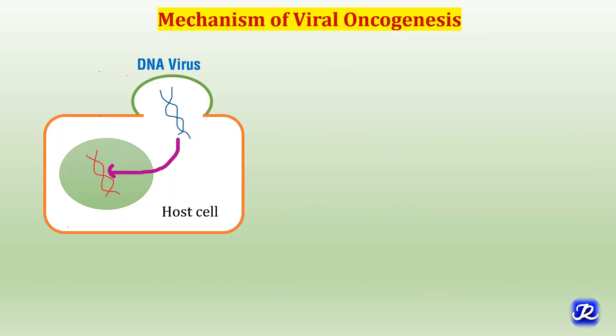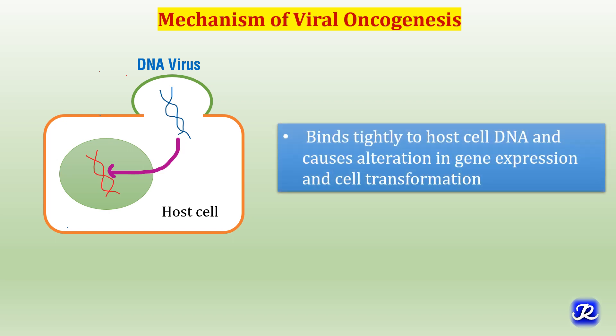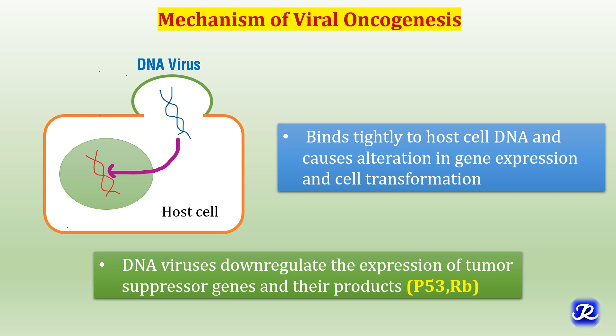Regarding the mechanism of viral oncogenesis, the genetic material of viruses is incorporated into the genome of host cells. When a DNA virus infects a host cell, it binds tightly to the host cell's DNA and causes alteration in gene expression and cell transformation by altering the types of proteins made in the cell. DNA viruses down-regulate the expression of tumor suppressor genes and their products like p53 and retinoblastoma genes, and thus are involved in viral oncogenesis.